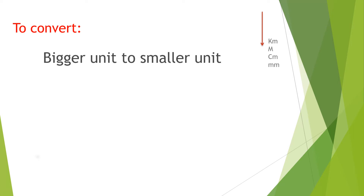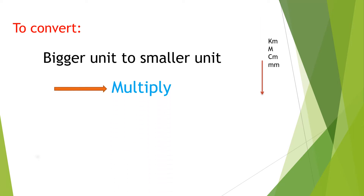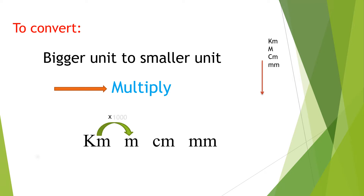Conversions. To convert a bigger unit to a smaller unit, we have to multiply the length by the conversion ratio. Suppose to convert kilometers to meters, we multiply the number of kilometers by 1000. To convert meters to centimeters, we multiply the number of meters by 100. Similarly, to convert centimeters to millimeters, we multiply the number of centimeters by 10.